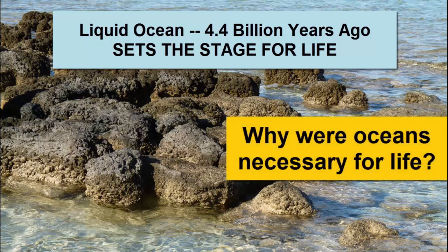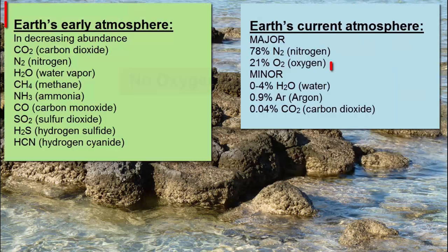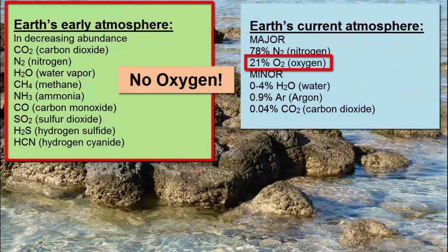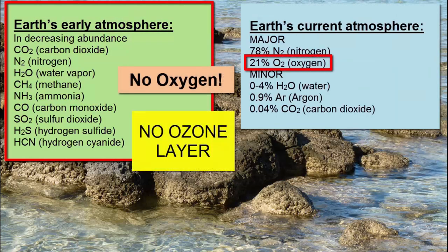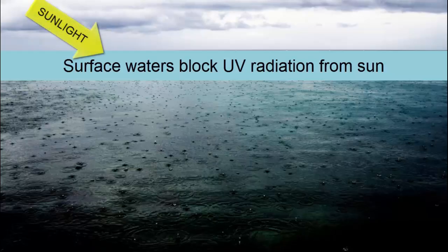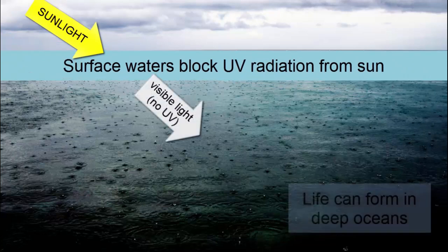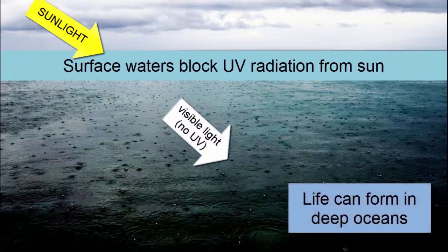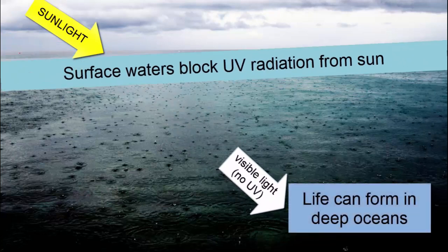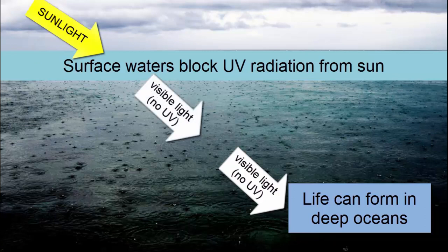Why were oceans necessary for life? Early Earth had no oxygen in its atmosphere, which means it also had no ozone layer. Ultraviolet radiation from the Sun readily reached the surface and would have irreparably damaged any biological material. Surface waters in the ocean block ultraviolet radiation, and thus oceans are the perfect place for life to first form.